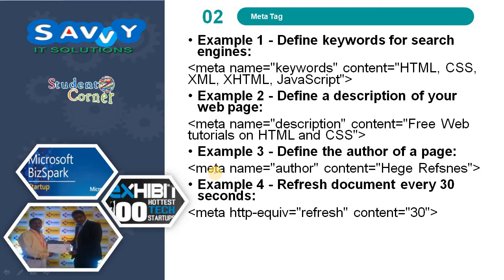The first use is to define keywords for search engines. Meta name is equal to keywords, content is equal to the relevant keywords we need to specify. Similarly for description, the name is description and we need to specify a small description about the web page. A unique description and unique keywords for each and every web page are required.